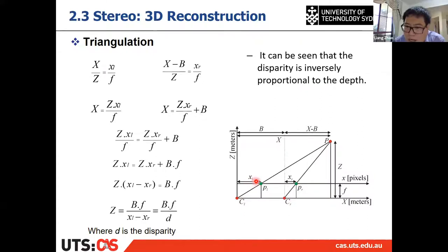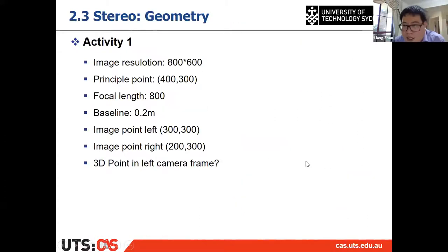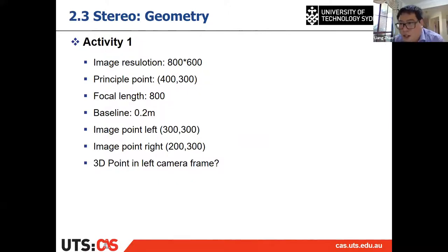What we always have for the UV values of the projection includes the principal point offset. So if you have a point on the image at (700, 700), you need to subtract the principal point to get your XL and YL. Please do this activity by yourself.